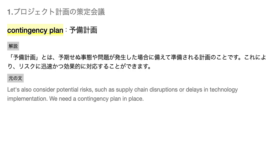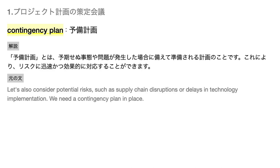Contingency plan — 予備計画 — とは、予期せぬ事態や問題が発生した場合に備えて準備される計画のことです。これにより、リスクに迅速かつ効果的に対応することができます。Integrating risk management strategies — リスク管理戦略を統合する — とは、プロジェクトの成功を確実にするために、リスクを特定、評価、対処する方法をプロジェクト計画に取り入れることを意味します。